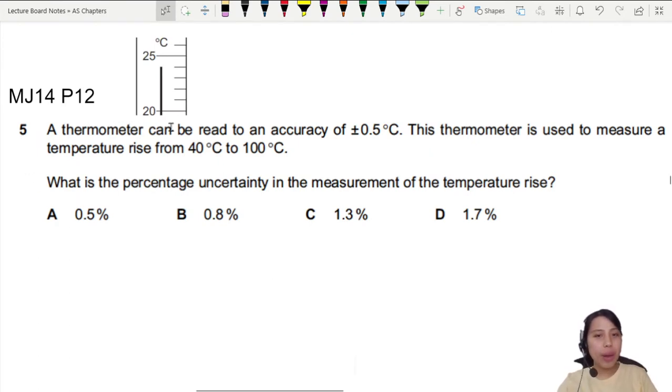Here we have a thermometer question where they tell us that a thermometer can be read to an accuracy of plus minus 0.5 Celsius. Where did they get this? How did they even know this uncertainty?